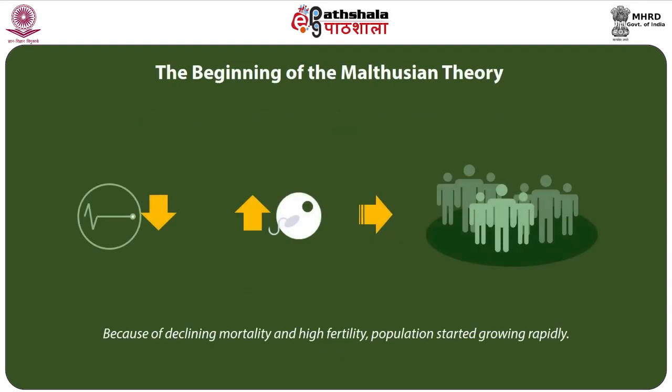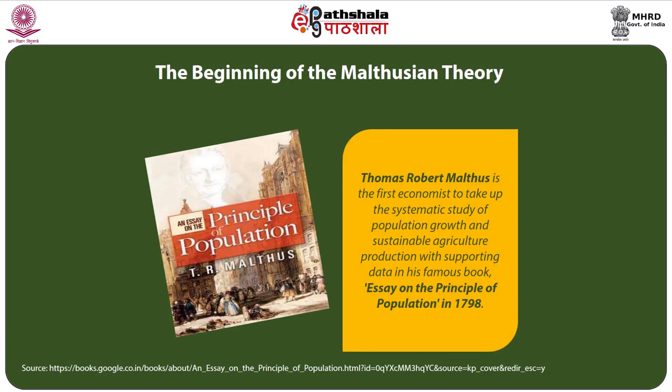Because of declining mortality and high fertility, population started growing rapidly. The rapidly growing population triggered fears among thinkers about the limited resources of land and agriculture yield, expecting misery among people. Some writings suggested adjustments between agricultural production and growing population, including sustainable agriculture production, as discussed in the famous book titled 'Essay on the Principle of Population,' published in 1798.